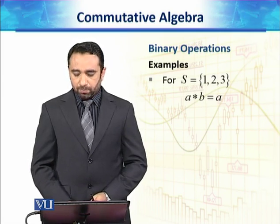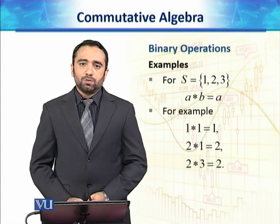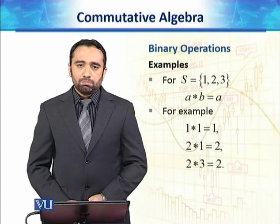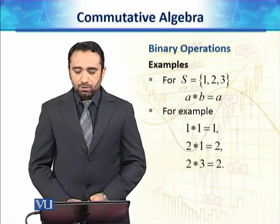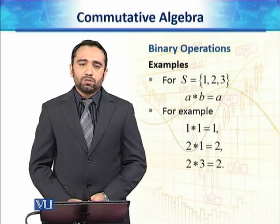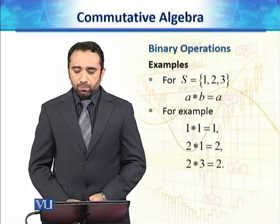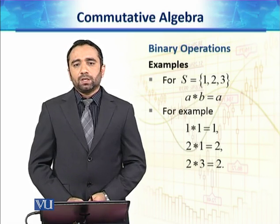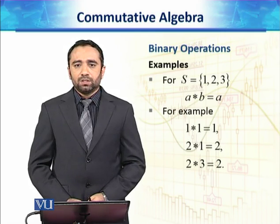If S is equal to some finite set, for example {1, 2, 3}, and we define a star b is equal to a. For example, if a is equal to 1 and b is equal to 1, then a star b is equal to 1. If a is equal to 2 and b is equal to 1, then 2 star 1 is equal to 2. And if a is equal to 2 and b is equal to 3, then 2 star 3 is equal to 2.